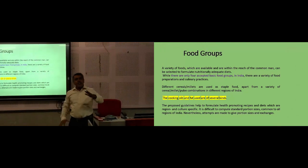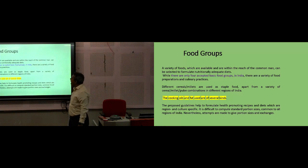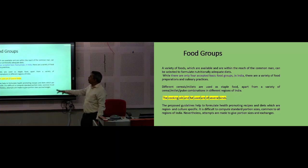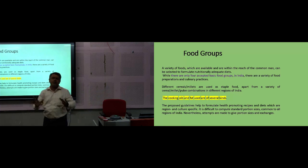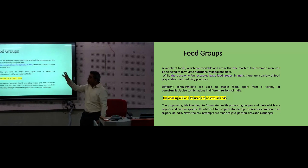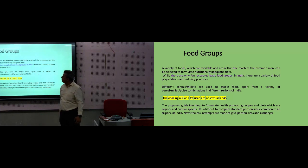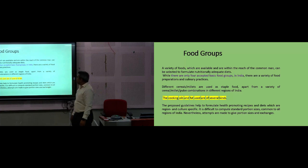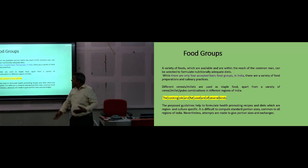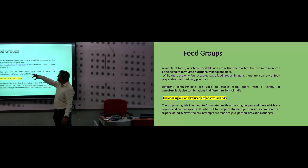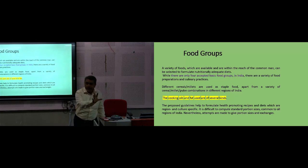Today we are dealing with food components. A variety of foods available within the reach of common people can be selected to formulate a nutritionally adequate diet. Every diet is not available everywhere, so how can we use food groups? While there are only four accepted basic groups in India, there are a variety of food preparations and culinary practices. India has a large number of agro-climatic zones with larger production of cereals and millets used as staple food.